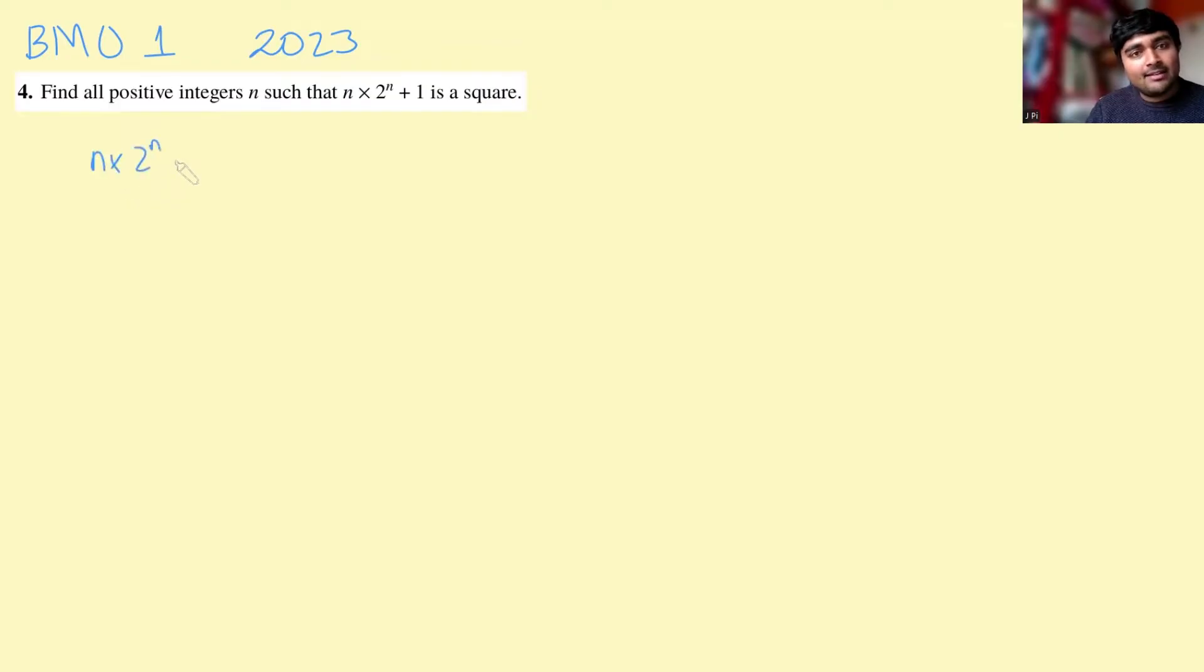So n times 2 to the n plus 1, we want it to be a square number. Let's just call that k squared. Bringing the 1 to the other side, we get n times 2 to the n is k squared minus 1.